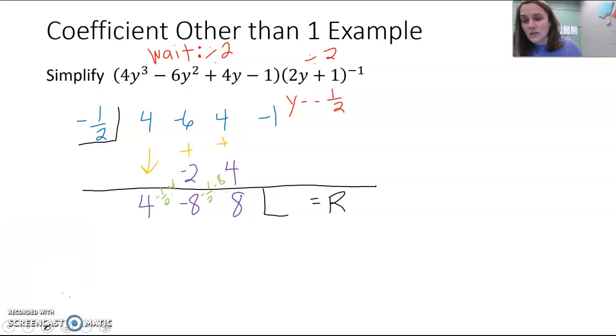And then we will finish it off by taking our negative 1 half that we have, timesing it by the 8 that we have on the bottom. And then negative 1 half times 8 is going to be negative 4. And add those last two together, negative 1 plus negative 4 would give us negative 5 for our remainder.